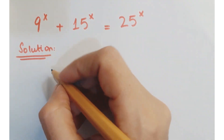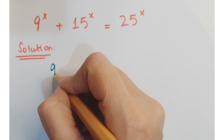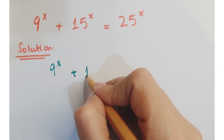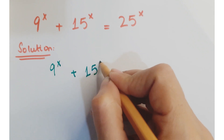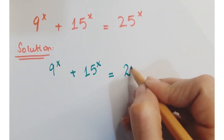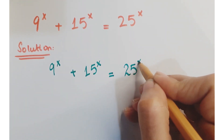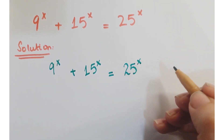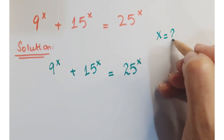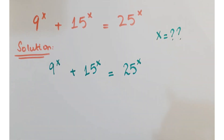Hi guys, look at this question. The question is 9 to the power x plus 15 to the power x equals 25 to the power x, and we have to find the value of x.